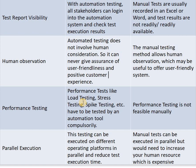Next parameter is performance testing. Performance tests like load testing, stress testing, and spike testing have to be tested by an automation tool compulsorily. In manual testing, performance testing is not feasible manually.